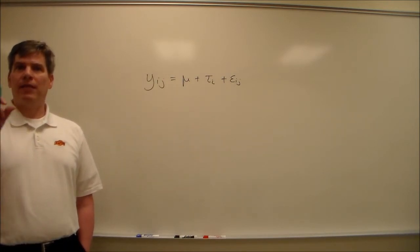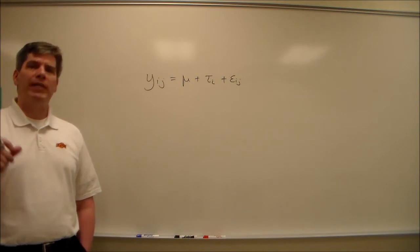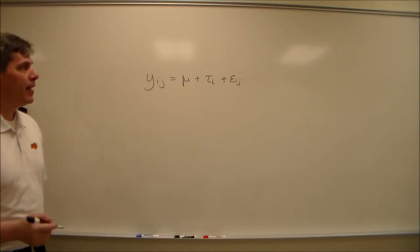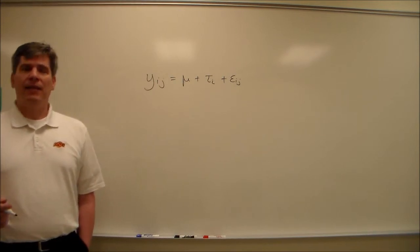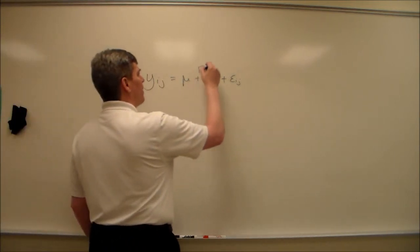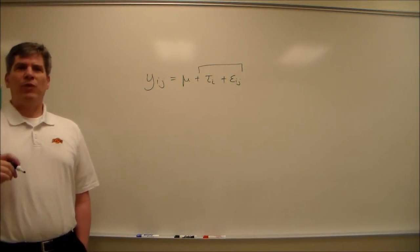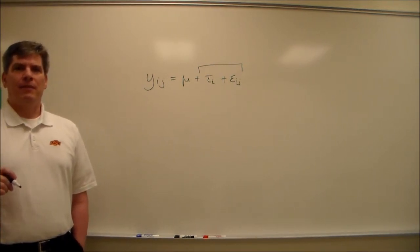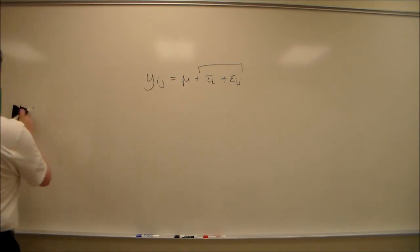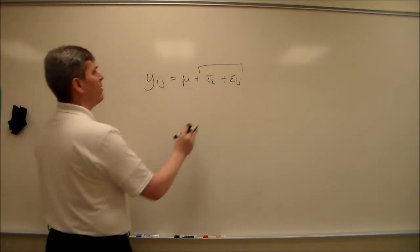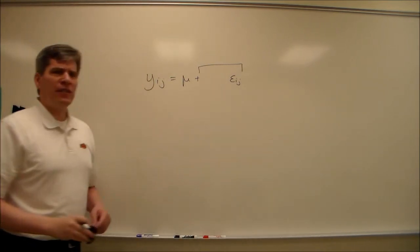So far we've seen these tau's as being fixed effects, where we care about understanding the difference between tau 1 and tau 2, tau 1 and tau 3, etc. If tau is a random effect, then this part is random variables. That's where the variation is. Without including the tau, if we take that tau out, there's the variation.